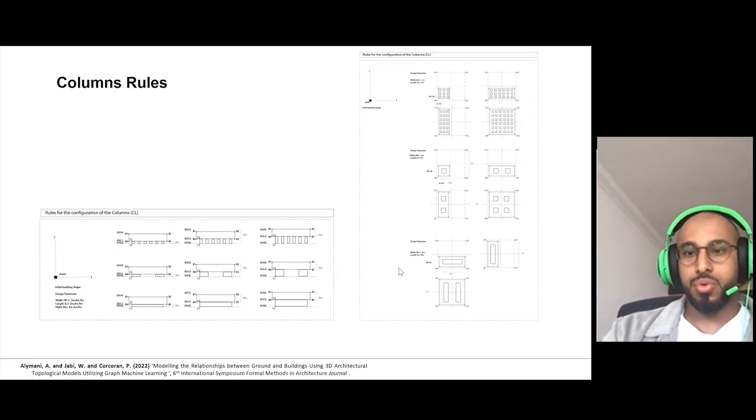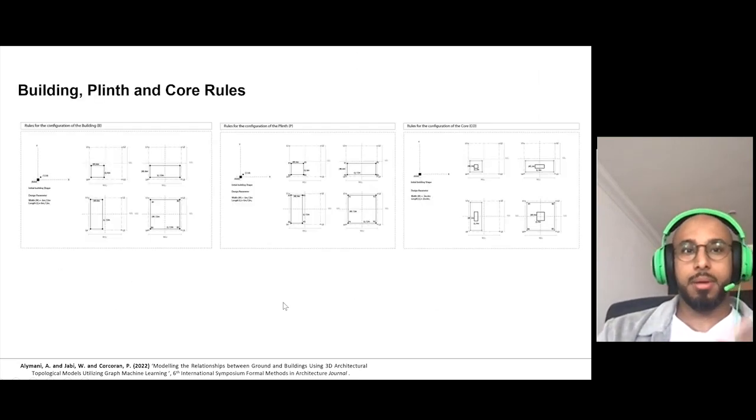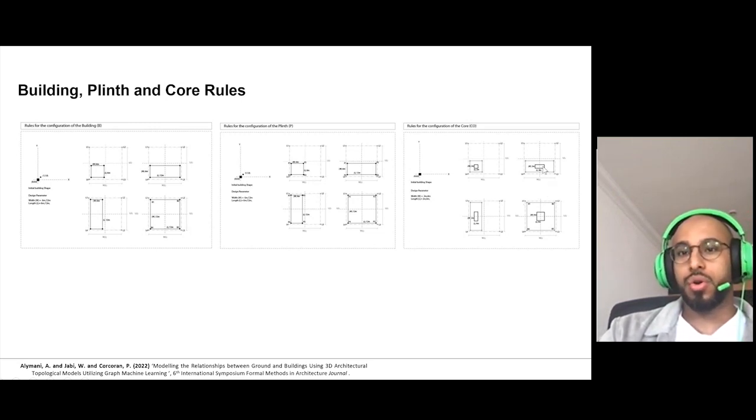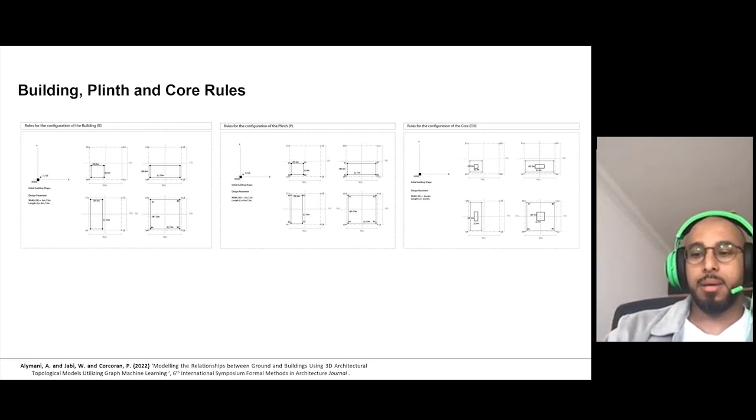And then for the column rules, we can have small columns where the building rests on small columns, or building rests on medium columns, or building rests on large columns. For building and plinth and core rules, the building can be 6x6, or 6x12, or 12x12, or 6x12 in another direction. Also, the plinth has the exact same rules, and the core is simply in the center of the building, just imposed in the center of the building.